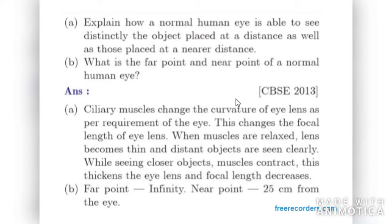The second part: what is the far point? Far point of a normal human eye is infinity, whereas the near point of normal human eye is 25 cm.